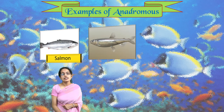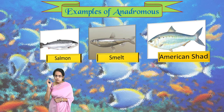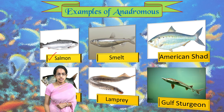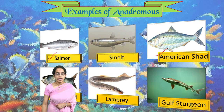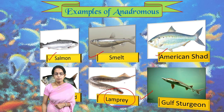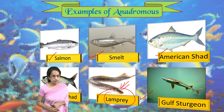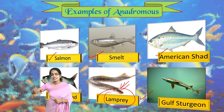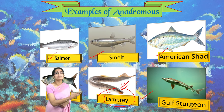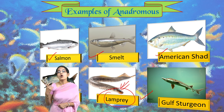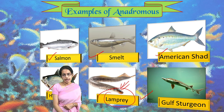Examples of anadromous fishes: most of the examples start with 'S', which is how you can remember them. Some of those are Salmon, Shad — American Shad and Hickory Shad — then Sturgeon and Smelt. One example which does not start with S but is important is Lamprey. As you can see, most catadromous and anadromous fishes are sleek, thin, long fishes that can easily move with water currents, and therefore they are part of this diadromous fish cycle or euryhaline circulation.